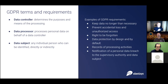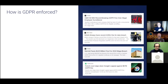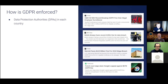How is GDPR enforced? There are Data Protection Authorities (DPAs) in each country that follows GDPR, responsible for finding companies that don't comply. Fines can be either 4% of turnover or 20 million euros, whichever is greater. Recent fines include H&M fined 41 million dollars in Germany. The top three include British Airways and Marriott — both fined by the UK regulator — and Google was fined as well.